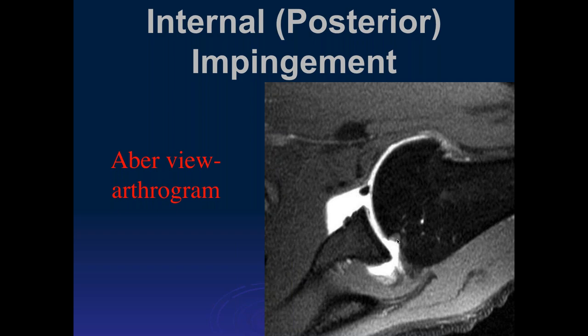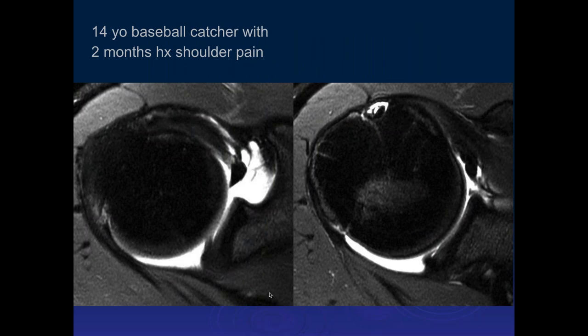It's also in the same location where you can get a Hill-Sachs impaction injury. But these are overhead throwers — younger athletes — and most of these patients do not have anterior instability, or they wouldn't be able to do what they're doing. This patient in addition has a little loose body, which is not part of the typical findings. So there's the bone impaction and cuff fraying.